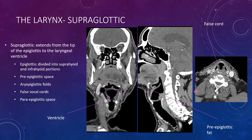The supraglottic larynx is from the tip of the epiglottis to the laryngeal ventricle, which is this space right here. I like the coronal view because it looks like a goblet — you have the false cords, the ventricle, and the true cords. Everything from the false cords up to the epiglottis is the supraglottic larynx. You want to make sure there's no infiltration of that preepiglottic fat. Where the epiglottis attaches is called the petiole. On axial view, you're looking for fat density — the false cords are fatty.